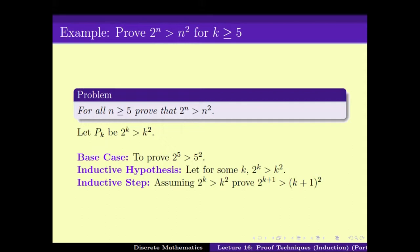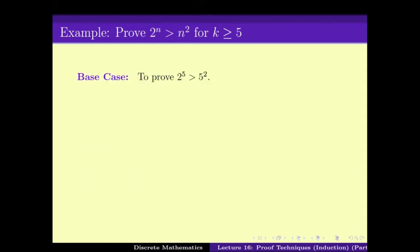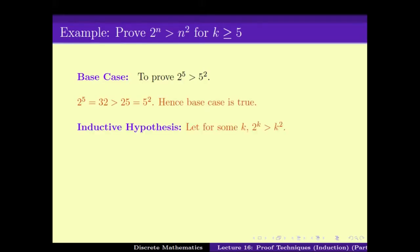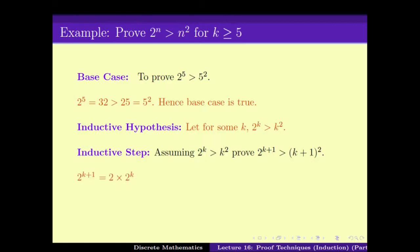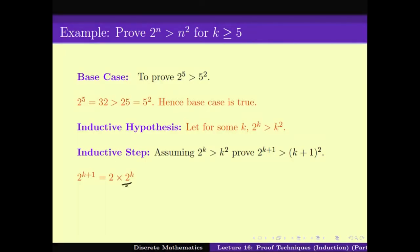Consider this problem: for all n ≥ 5, 2^n > n². This problem fits the framework where instead of 'for all k ≥ R', we have 'for all n ≥ 5, 2^n > n²'. The Pk statements are of the form: Pk is 'prove that 2^k > k²'. And the problem is restated as: for all k ≥ 5, Pk is true.